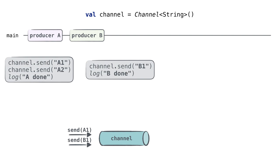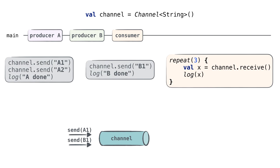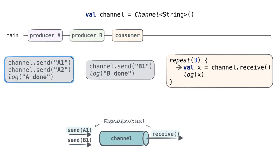The main thread gets free and the third coroutine, the consumer, is started. It calls receive on the channel. Now the rendezvous happens. There is the send call trying to send the value and the receive call ready to receive the value. These calls meet and the receive call can receive the actual value. Note that when the rendezvous moment happens, the suspended coroutine gets awakened.